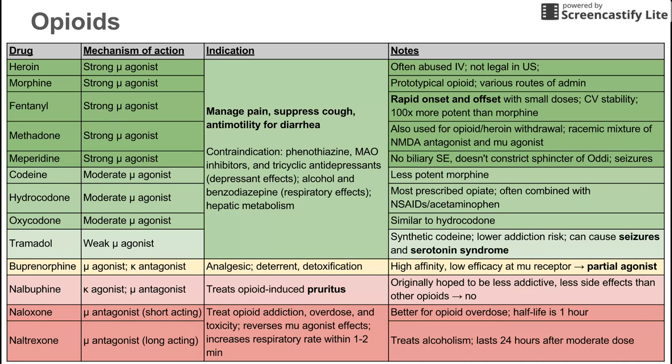Methadone is mostly used for opioid and heroin withdrawals. It's another strong mu agonist. The mechanism is that it's administered as a racemic mixture of an NMDA antagonist — that's a glutamate antagonist — and a mu agonist.